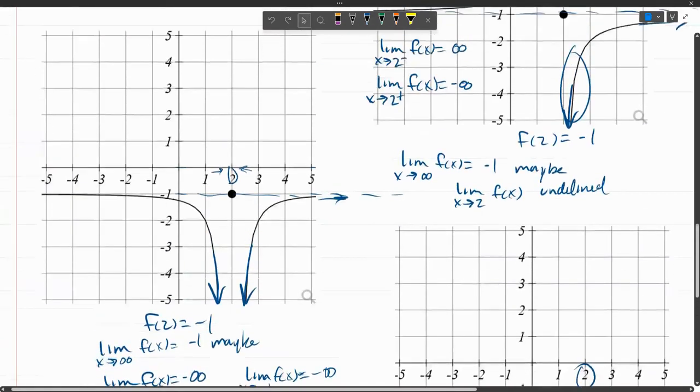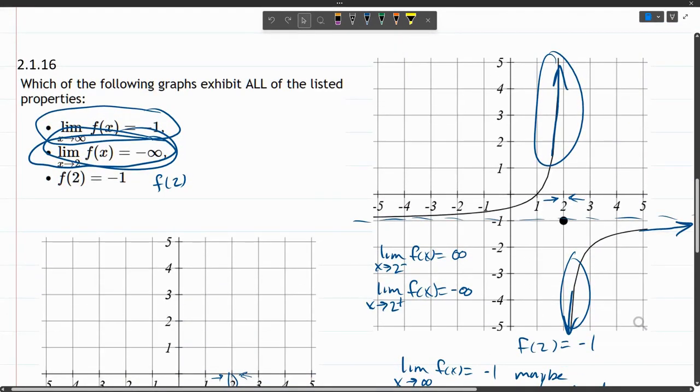You have lots of questions that are very similar to this with slightly different properties and slightly different graphs. You can just use process of elimination, but I do recommend you look at these properties on every graph before you just click on the right answer.